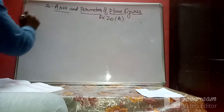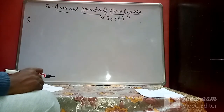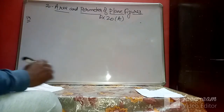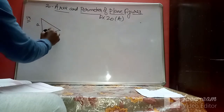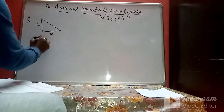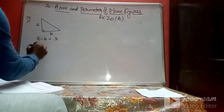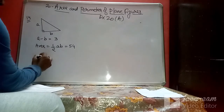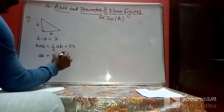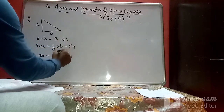In question 14, the difference between the two legs of a right-angle triangle is 3 cm, so a − b = 3. The area is 54 cm², meaning ½ × a × b = 54, so ab = 108. We now have two equations: a − b = 3 and ab = 108.